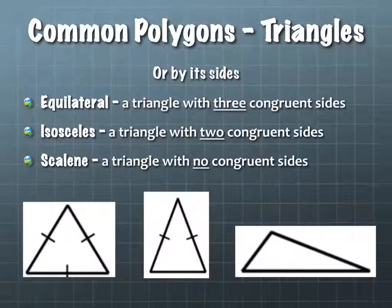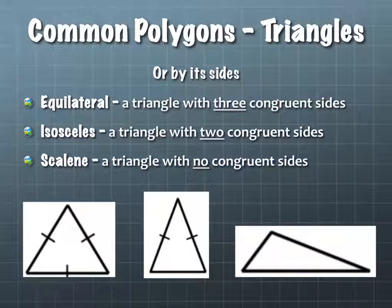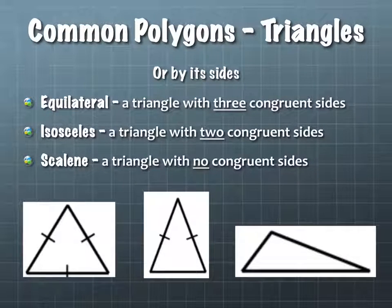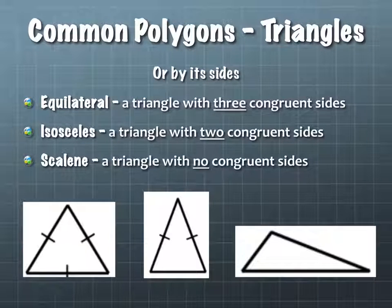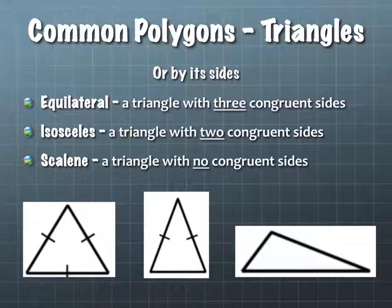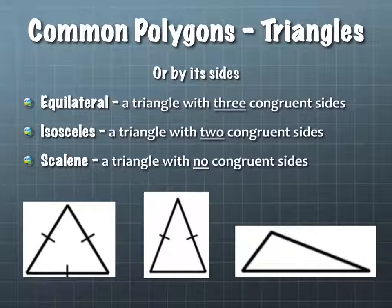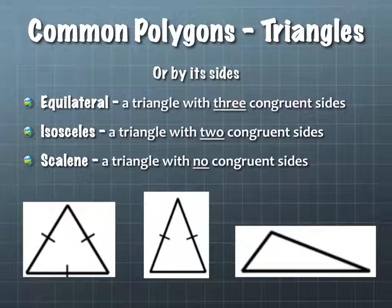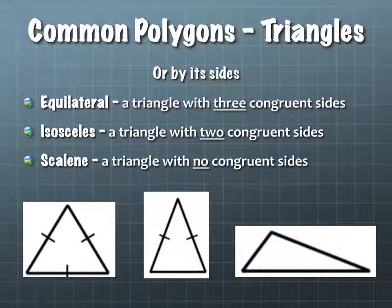Another way we can classify triangles is by their sides. An equilateral triangle is a triangle with three congruent sides — all three congruent. An isosceles triangle is a triangle with two congruent sides. And a scalene triangle is a triangle with no congruent sides.